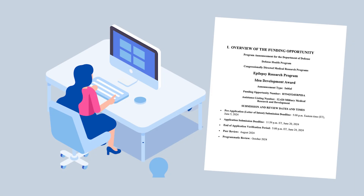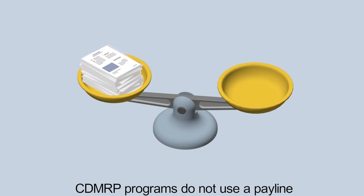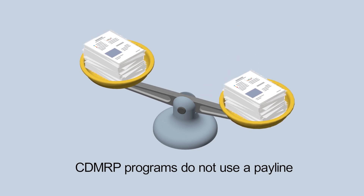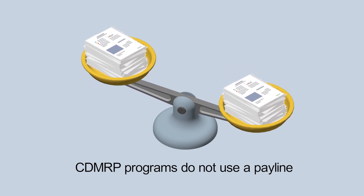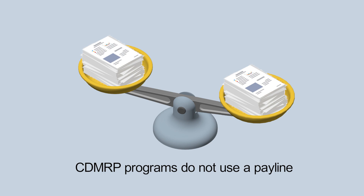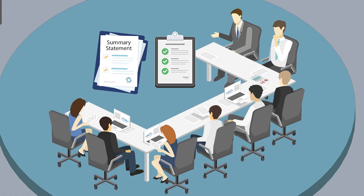When working on your application, please carefully follow the instructions in the funding opportunity and include the correct information within the correct application component attachment. Please note that CDMRP programs do not use a pay line, and applications that receive the highest scores at peer review are not automatically recommended for funding at programmatic review. Rather, peer review ratings and evaluations are just a subset of the criteria used by programmatic reviewers.